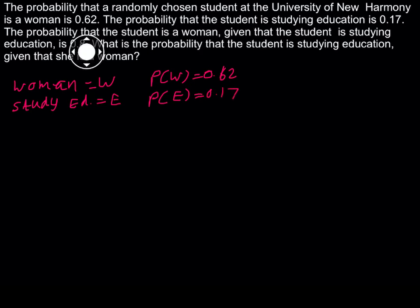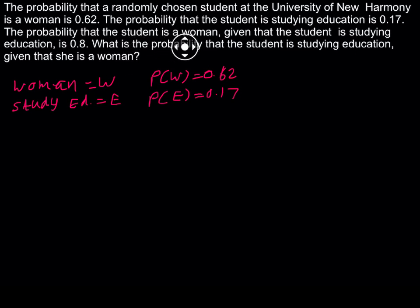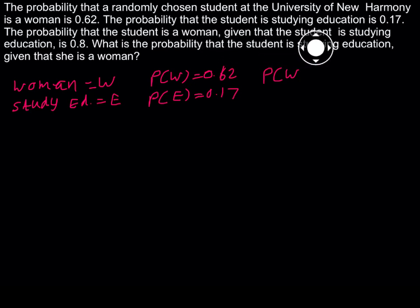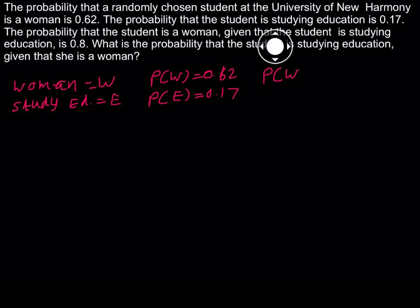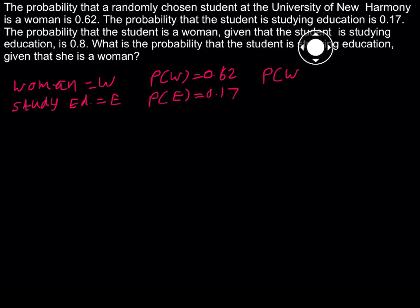Next, the probability that the student is a woman — that is W. But keep reading: given that the student is studying education. They add a condition, so that should be the condition here — study education, E. That equals 0.8. So we have P(W | E) = 0.8.